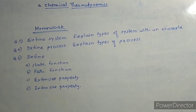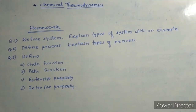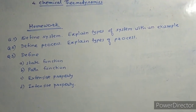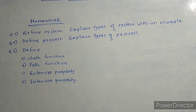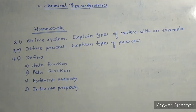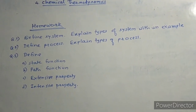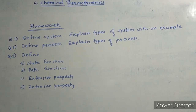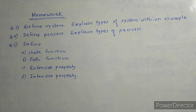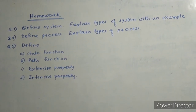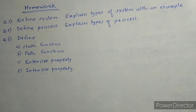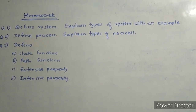To summarize today's lecture: we covered thermodynamics — its definition, basic concepts of system and surroundings, types of processes, and four properties of the system: state function, path function, extensive property, and intensive property. Students should write in their notebooks and solve questions one to three. Next we will see the derivation of the maximum work done.